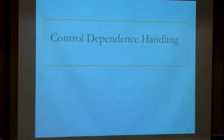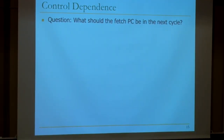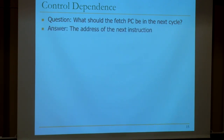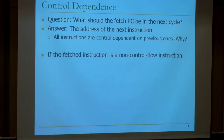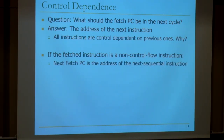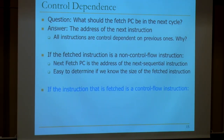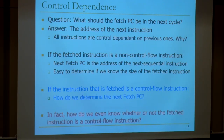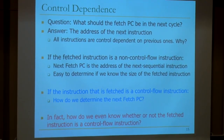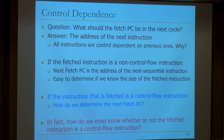Let's jump to control dependence handling now. The basic question is: what should the fetch PC be in the next cycle? It should be the address of the next instruction to execute. If the fetched instruction is a non-control flow instruction, the next fetch PC is the next sequential instruction — easy to determine if you know the instruction size. If it's a control flow instruction, how do we determine the next fetch PC?